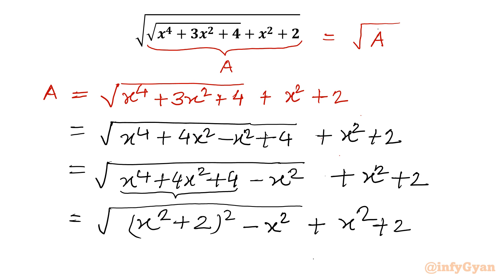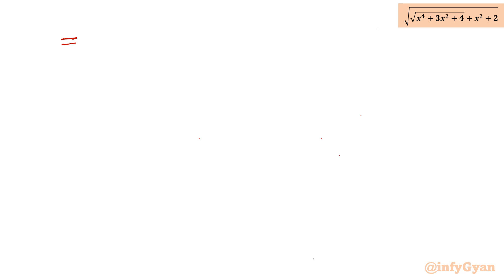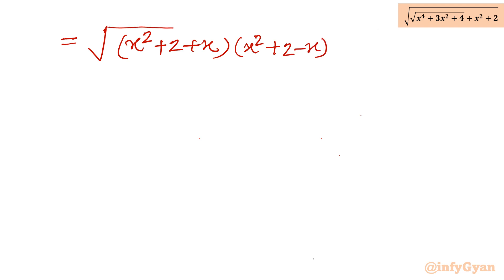Now you can see the difference of two squares formula. If I consider this as a, then it is a squared, and if x is b, then it is b squared. So I will use the a squared minus b squared formula, which is a plus b times a minus b. Applying this, I get x squared plus 2 plus x, times x squared plus 2 minus x. So I can write square root of x squared plus 2 plus x, times x squared plus 2 minus x, and then without the square root we are having x squared plus 2.